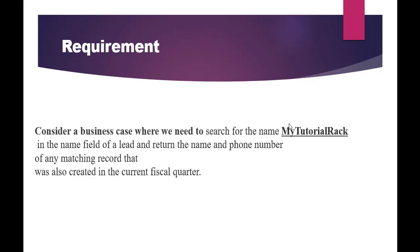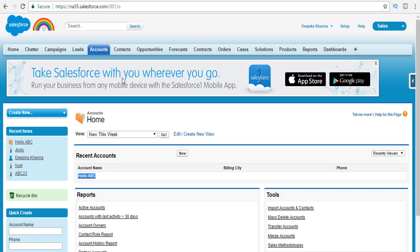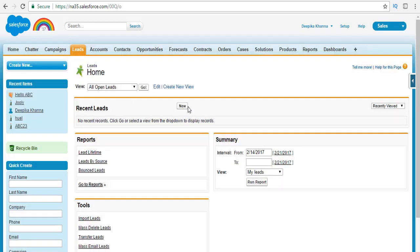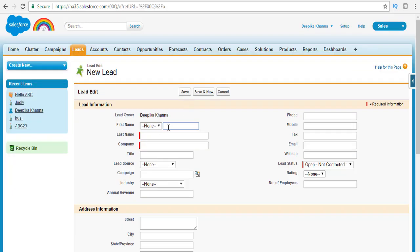So we are expecting the query to return only the name field and the phone number field. Now what we're going to do is go to the lead records and enter some leads with the name MyTutorialRack so we can test it. We'll go ahead and add a couple of records.